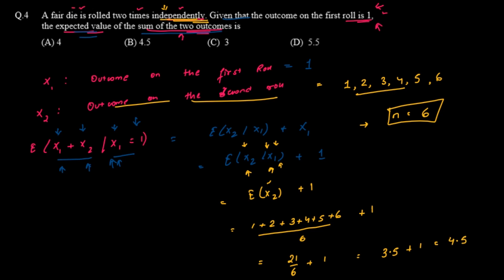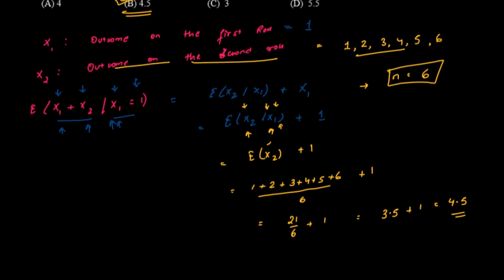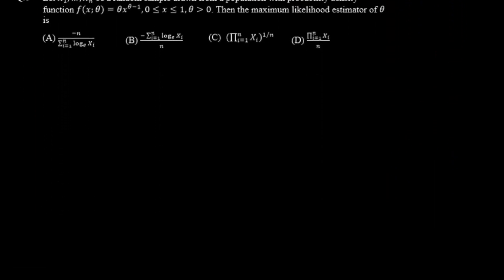So the expected value of the sum of the two outcomes is 3.5 + 1 = 4.5. Checking the options, option B has the value 4.5, so option B is the correct answer.